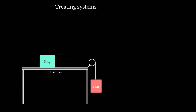This problem is a classic — you're going to see it in basically every single physics textbook. The problem is this: if you've got two masses tied together by a rope, and that rope passes over a pulley, what's the acceleration of the masses? Specifically, what's the acceleration of the three kilogram mass, and what's the acceleration of the five kilogram mass?